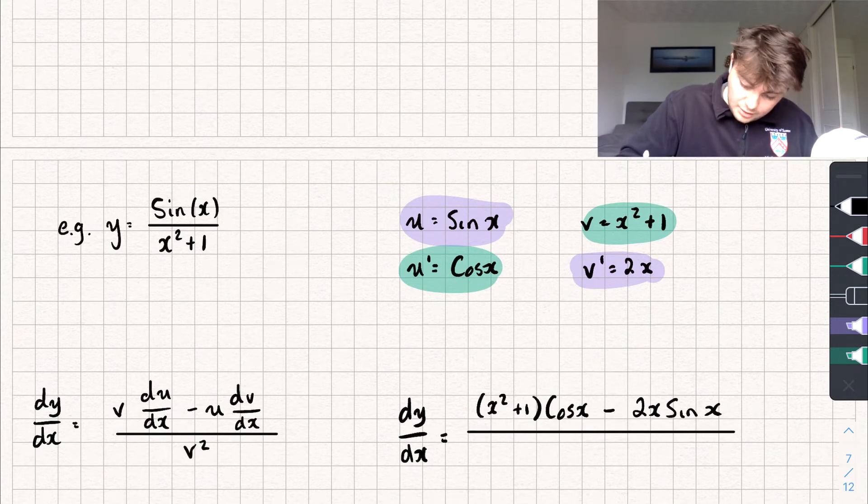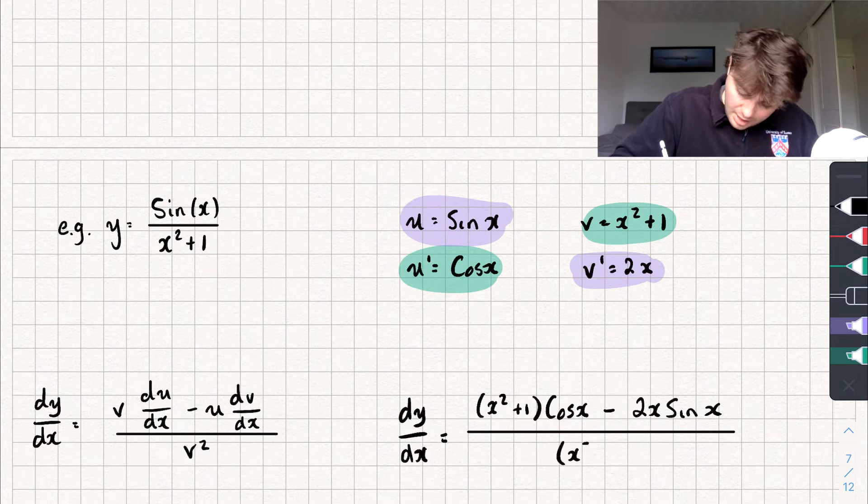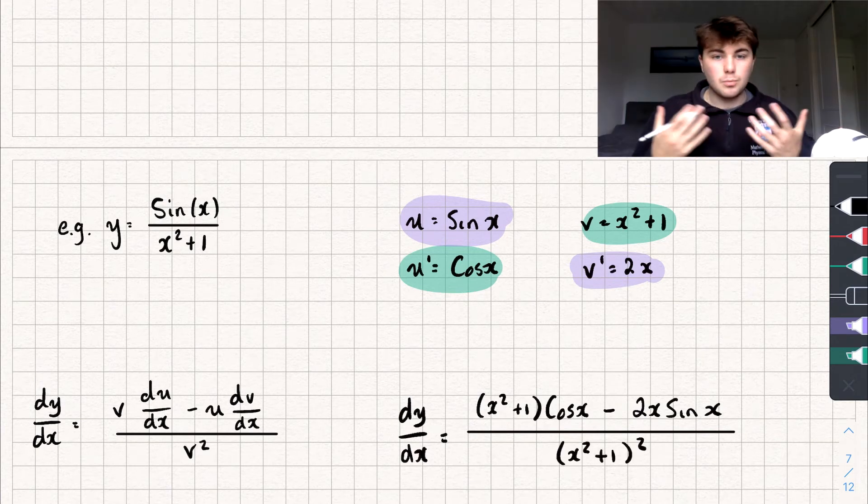And then we're going to take all of that and divide it by v squared, which is (x squared plus 1) all squared. So that's pretty easy.